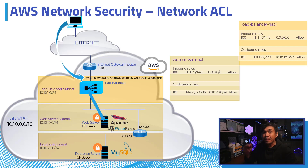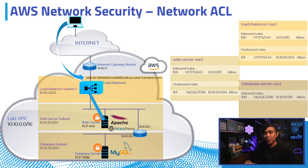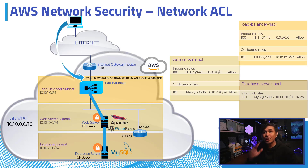We also added an inbound rule allowing MySQL traffic from the web server. This rule is added in our database server NACL, which is attached to the database subnet. These are all traffic flows from one component to another — from the internet, to the load balancer, to the web server, to the database server. These are all requests from the client, also called downstream traffic.